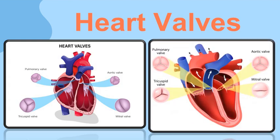When the left ventricle contracts, the mitral valve is closed and the aortic valve opens, so the blood can flow into the aorta. Valves also help blood travel back to the heart against gravitational force.